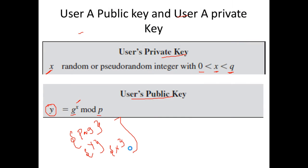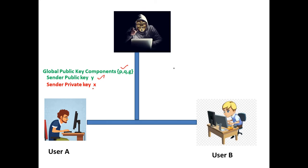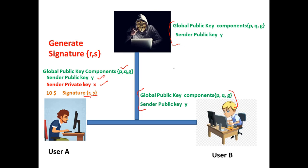Looking at the animation, user A has computed global public key components P, Q, G, along with public key Y and private key X. After identifying these, he shares the public key components and public key with everyone — making them available to the public. Next, we see how user A generates the digital signature using all these components.